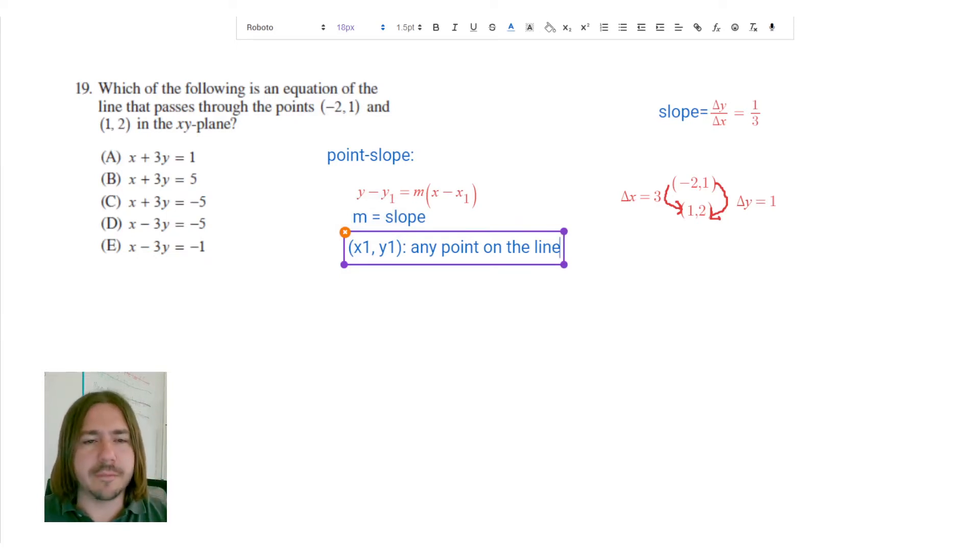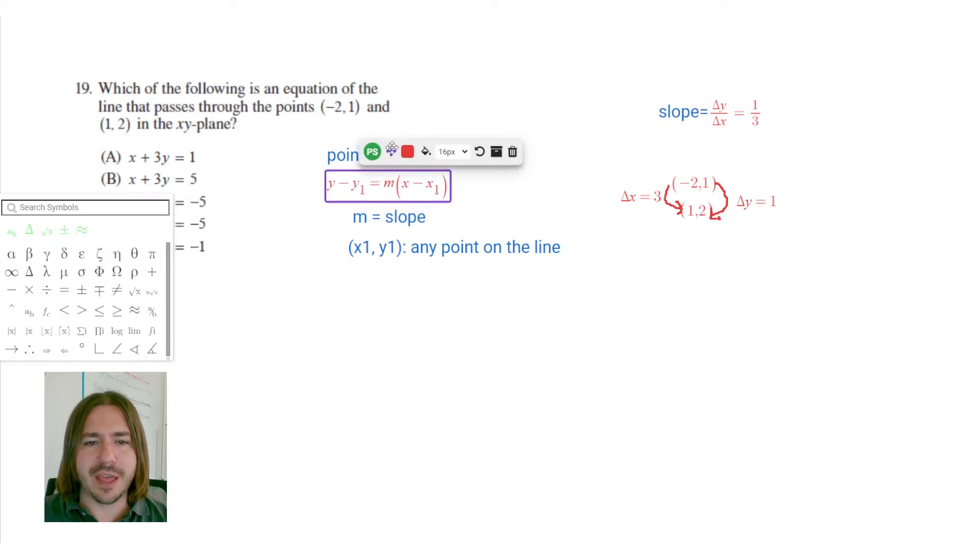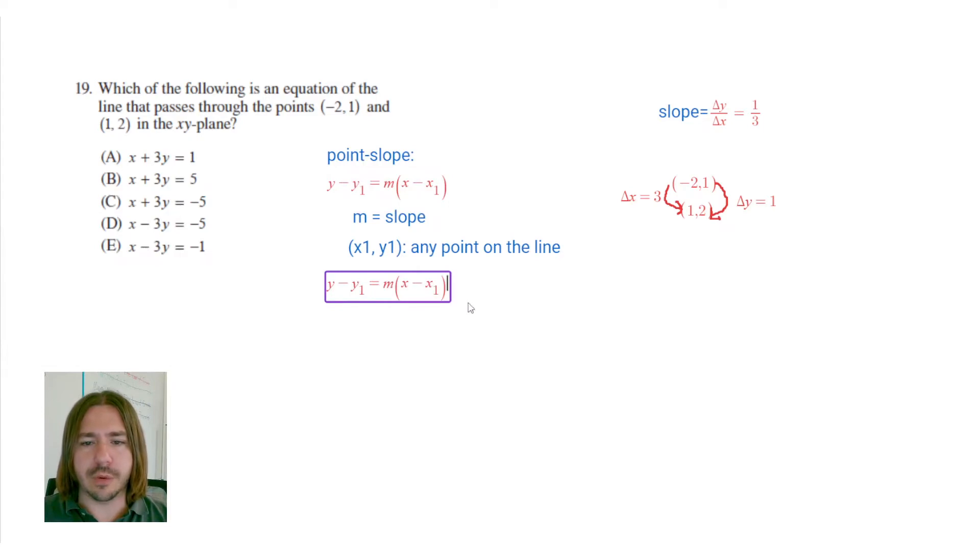Just kind of use whichever one seems easier. Given the choice, I like to go with the one that has more positive numbers because then I don't have to worry about minus a negative. But it really doesn't make a huge difference. So we already found the slope—it was 1/3. And then for x1, y1, I'm going to use (1, 2). So my x1 is going to be 1, and my y1 is going to be 2.